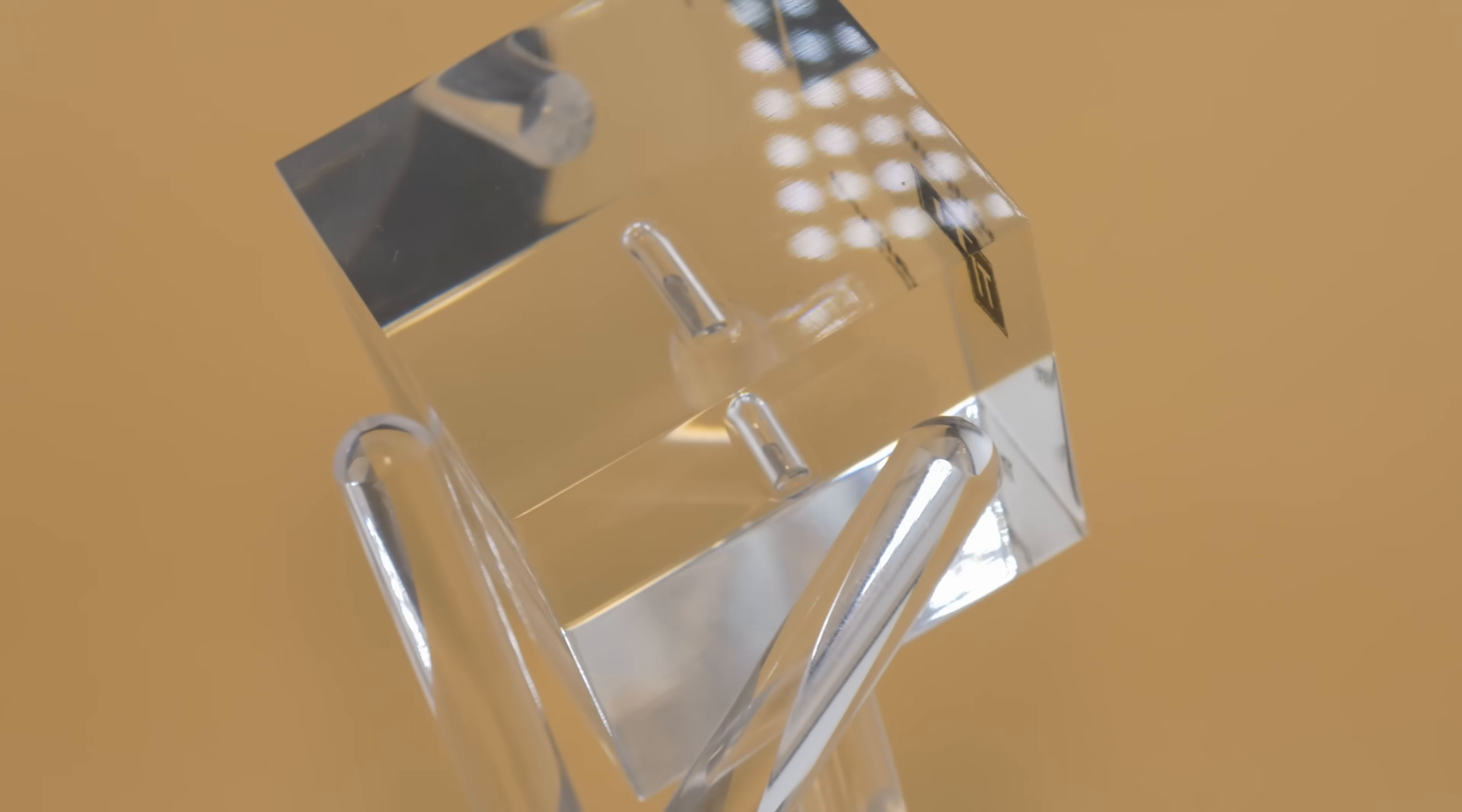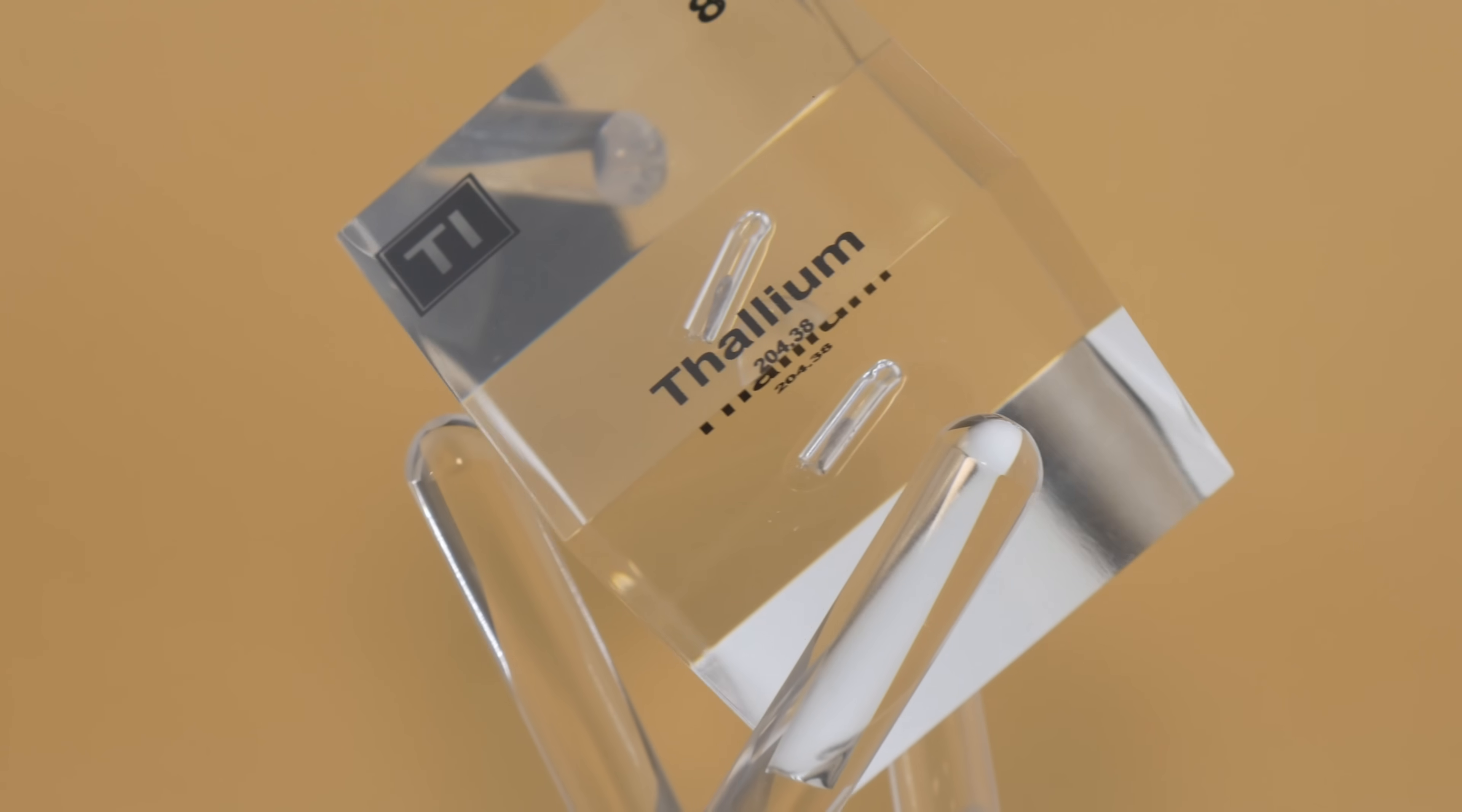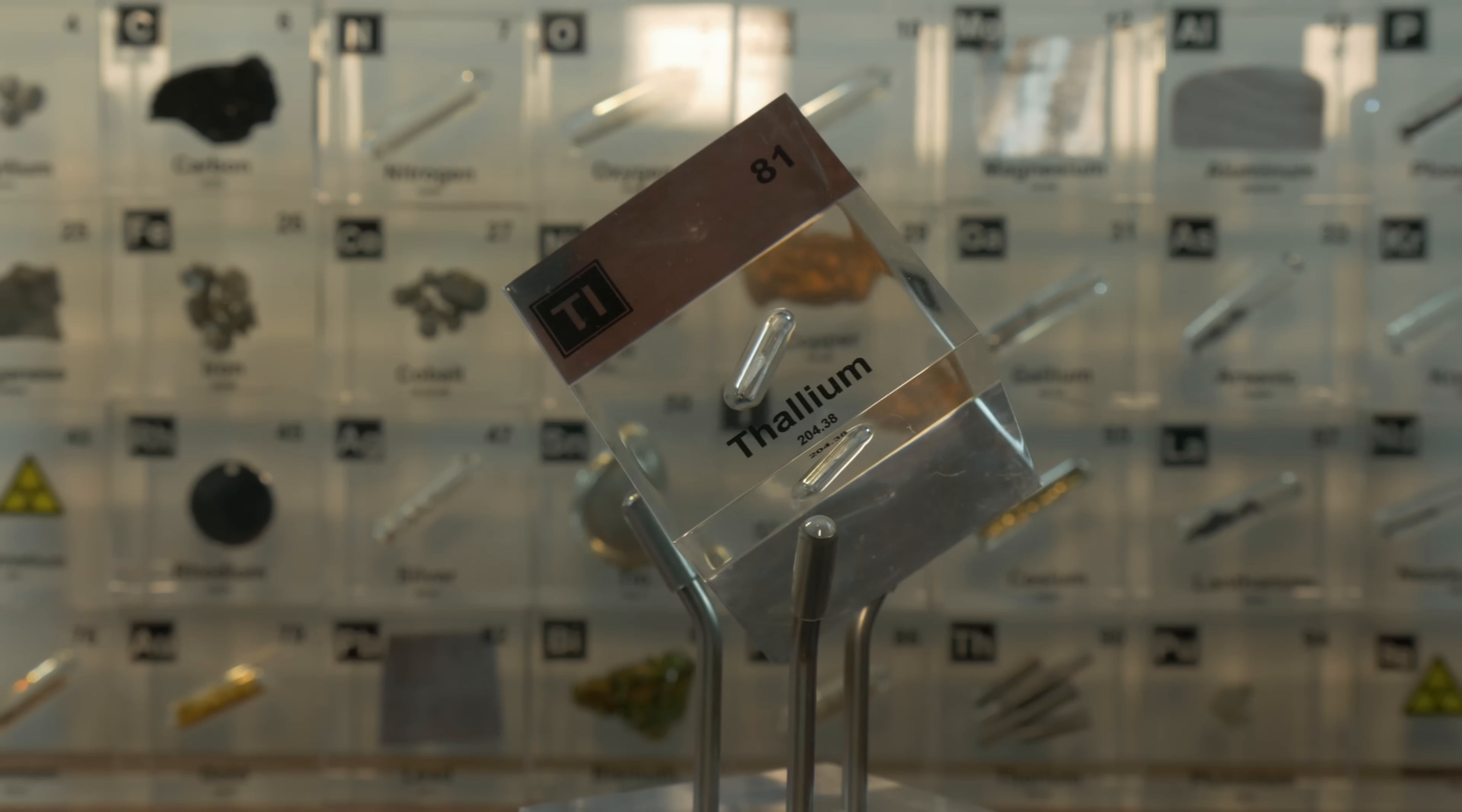Now, thallium's contribution to optics is quite interesting. Certain thallium salts, like thallium bromide iodide crystals, have the remarkable ability to transmit infrared light. Under the trade name KRS-5, these crystals were used to make specialized infrared lenses and windows for devices like night vision equipment and thermal cameras. Moreover, adding thallium oxide to glass can dramatically increase the glass's refractive index. Imagine high-density glass that bends light more strongly, useful for making advanced camera lenses or optical instruments. Of course, given the toxicity, handling and disposing of such thallium-containing glasses had to be done with care.